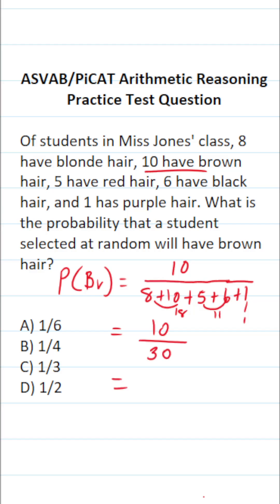So this becomes 10 over 30. We can cross out these corresponding zeros. So the probability of selecting a student that has brown hair is one-third. So this one is C, of course.